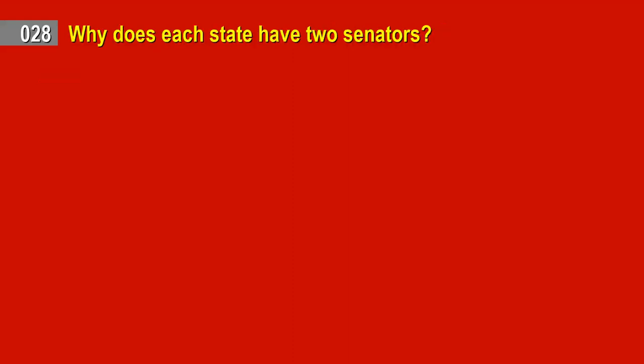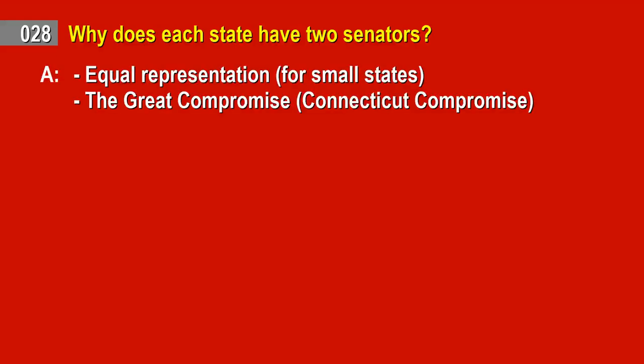Question 28. Why does each state have two senators? Answer: Equal representation for small states. The Great Compromise, Connecticut Compromise.